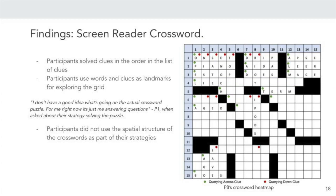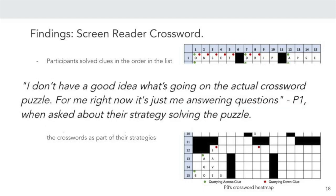Our second observation was that the participants often used words and clues as landmarks for exploring the grid. The SR crossword's design allowed a way to accurately jump from clues in the list of clues to a corresponding location of the word in the grid and back to the list. This also meant that they did not know the exact location of the word within the grid and could access the puzzle to only answer the clue. As a result, majority of participants demonstrated strategies that did not use the spatial structure of the crossword. An example of this is seen in the following quote from our participant number 1. When asked about their preferred strategy for solving the puzzle, they say, I don't have a good idea what's going on in the actual crossword puzzle. For me right now, it's just me answering questions.